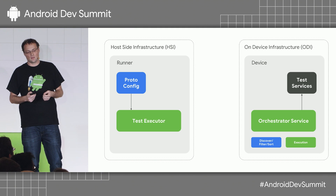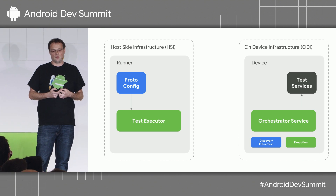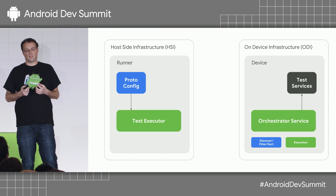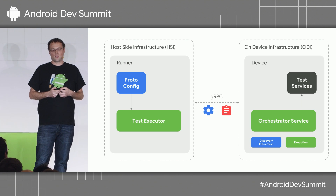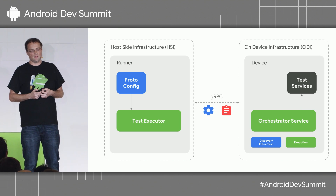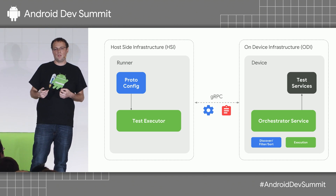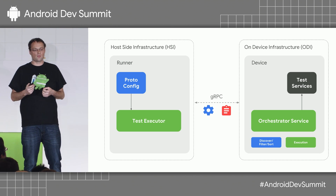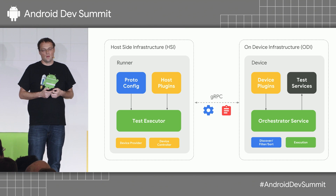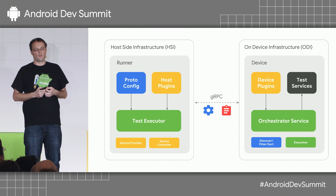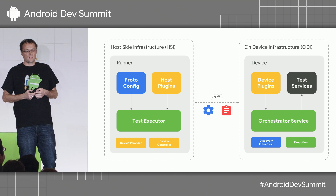To decouple the host from the device, we have a new orchestrator service. You can think of it as the brain of test execution that runs on a device, and it's responsible for discovery, filtering, sorting, and execution. The orchestrator service is just a gRPC service that can be implemented by any device. We use gRPC to communicate between the host and the device, which gives us performance, speed, and a lot of stability. It also allows us to stream test results back to the host in real time. We also have a lot of extension points — host plugins that allow you to run code on a host, and device plugins that allow you to run code on a device.